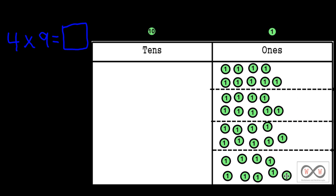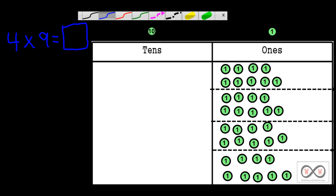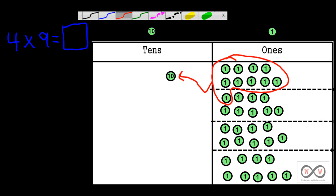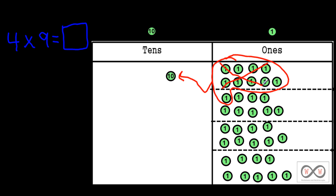Now you could count them all up — absolutely you could. But knowing something about the place value chart, we can't have more than nine in each place. So what we're going to do is go ahead and circle groups of ten. We've got nine here plus one more, and that gives us ten. So we're going to regroup or bundle those ones — that gives us one ten. Once you've bundled it up, you might want to X those out to show that you've already counted that one.